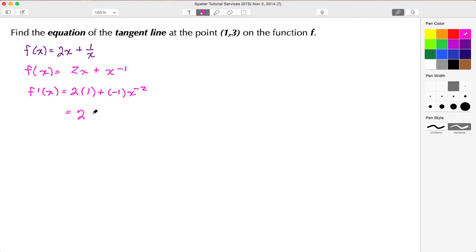At this point, let's do a rewrite just to clean up a bit. I have 2 times 1 to give me 2 plus here I have a negative 1 over x squared. And again, I can rewrite to make this 2 minus 1 over x squared.